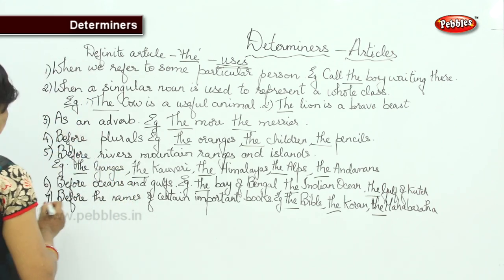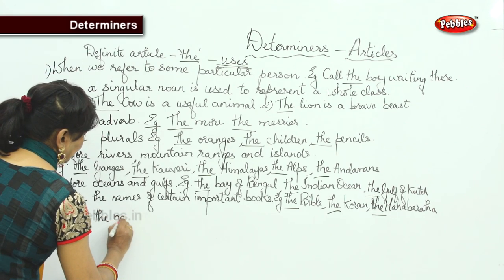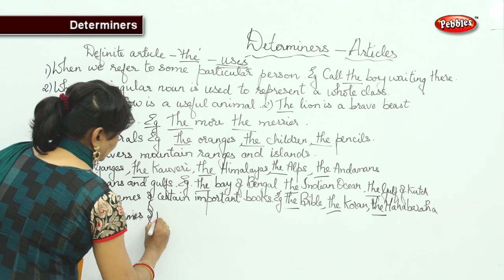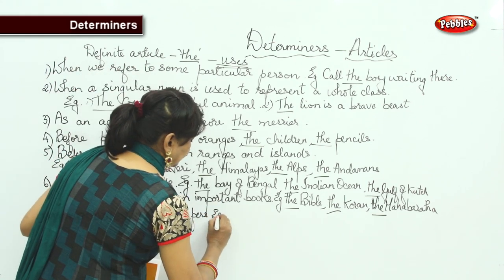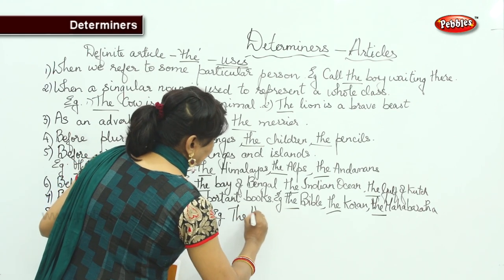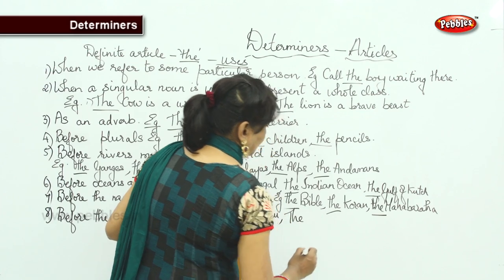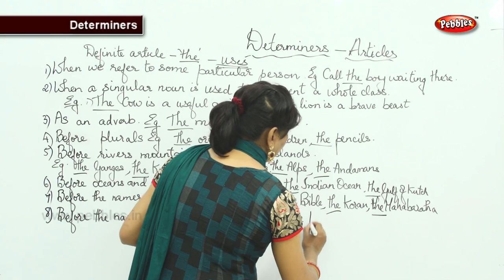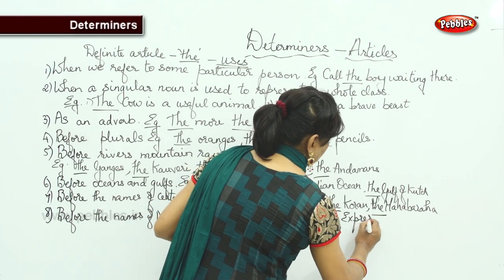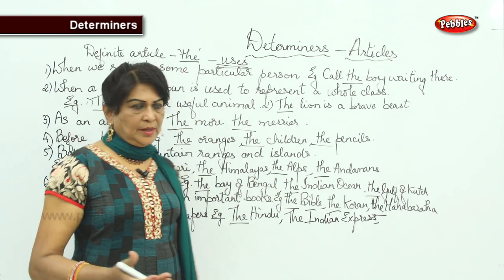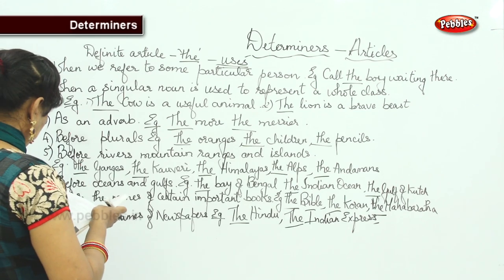Next: we use 'the' before the names of newspapers. Examples: 'the Hindu', 'the Indian Express', 'the Deccan Chronicle', 'the Times of India'. Before all newspaper names we use 'the'.